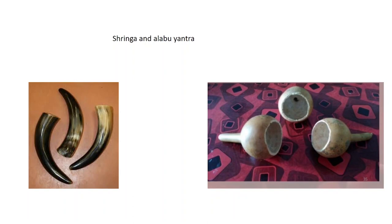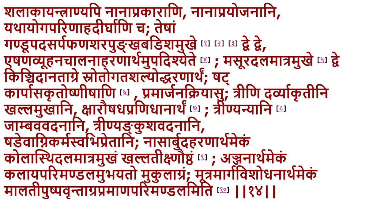Stringa and alabu are very specific instruments used in the context of Raktamokshana. When we go into the Raktamokshana chapter we will discuss more about these instruments and their utilities. The suction apparatus used now could be an alternative to the stringa and alabu. Rather than using an exact replica, we use button suctions of different categories to achieve the same purpose.